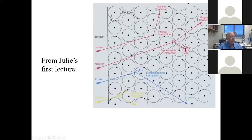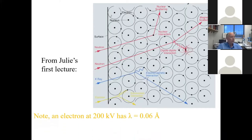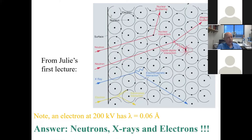The answer is x-rays and neutrons. Here's a slide I borrowed from Julie's first lecture on neutron and x-ray scattering. I also noticed that down at the bottom there are some electrons. An electron accelerated at 200,000 volts has a wavelength of about 0.06 angstroms — short enough to image atoms with electron diffraction as well. So the answer is that neutrons, x-rays, and electrons can all allow us to see things at an atomic scale.